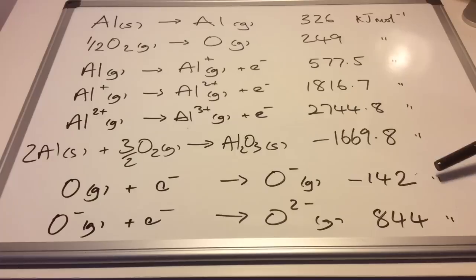The last two are the electron affinities for oxygen, the first and the second. If you have a go at constructing the cycle, I'll run through it and then have a go at calculating the value for the lattice enthalpy for aluminium oxide, and then I'll go through the calculation as well.